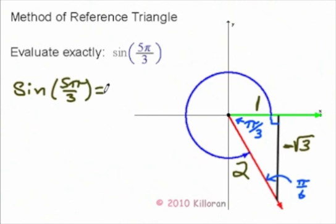So opposite of this is negative square root of 3. The hypotenuse is 2. So I'm going to get negative square root of 3 over 2. And that's our answer.